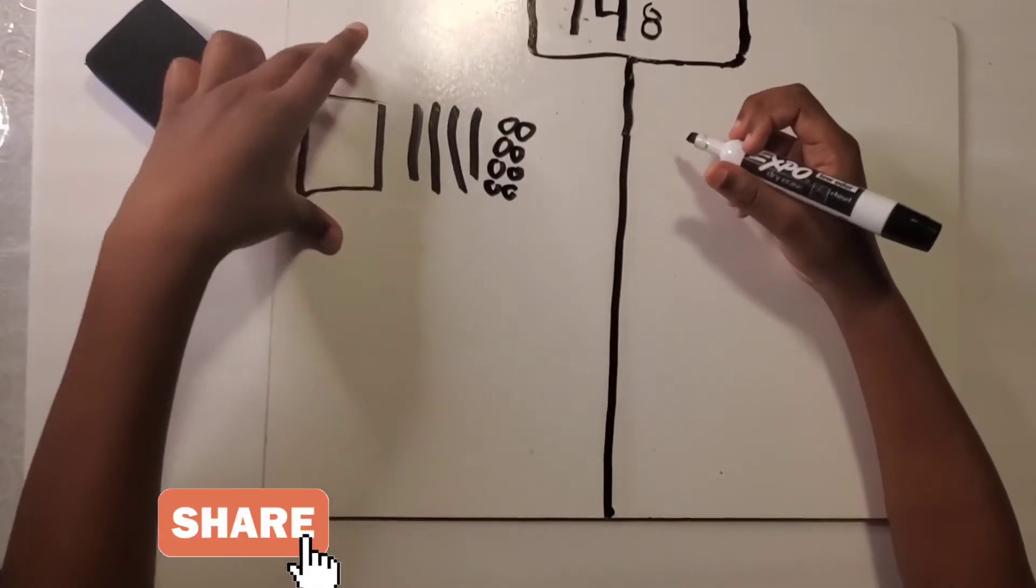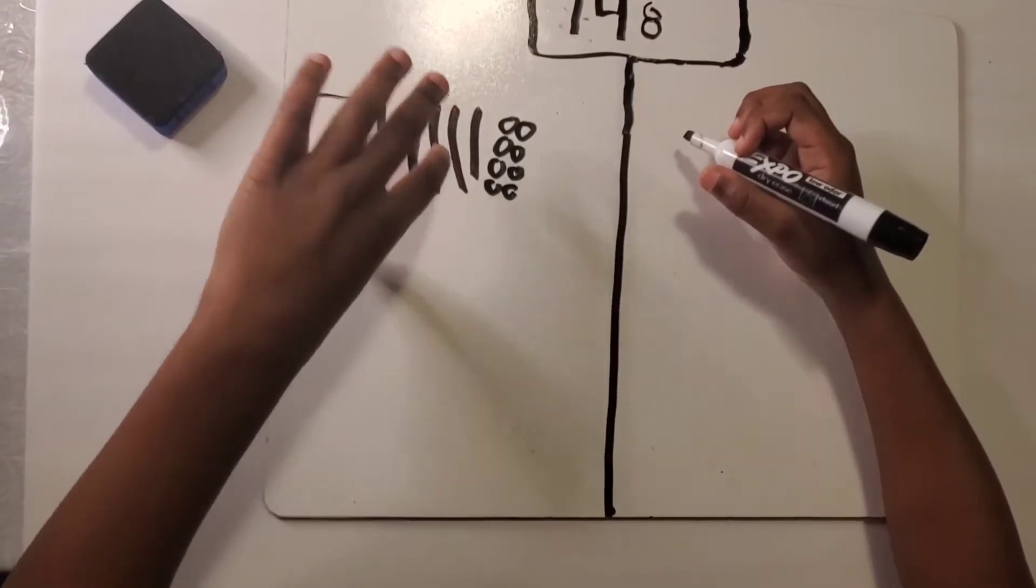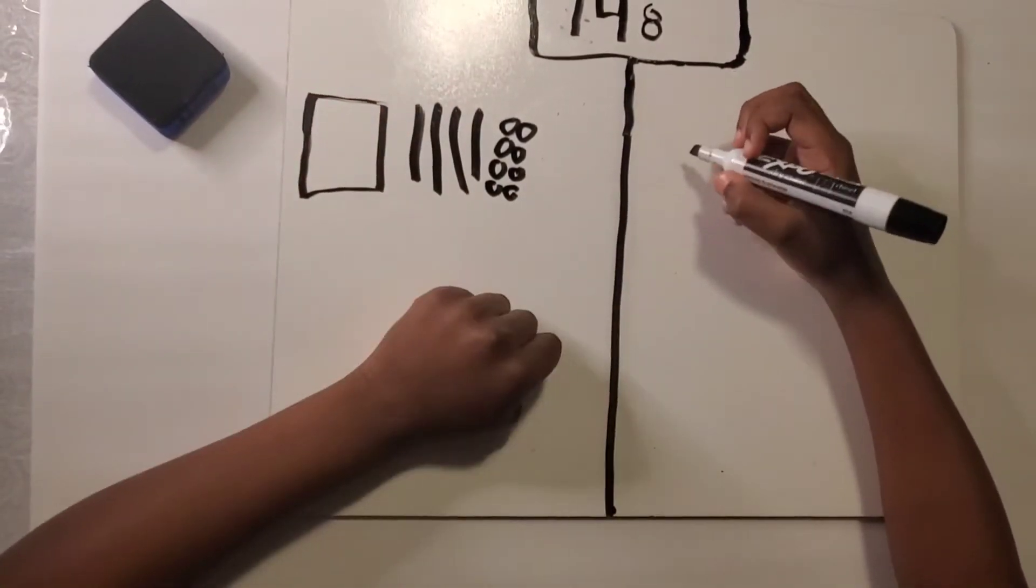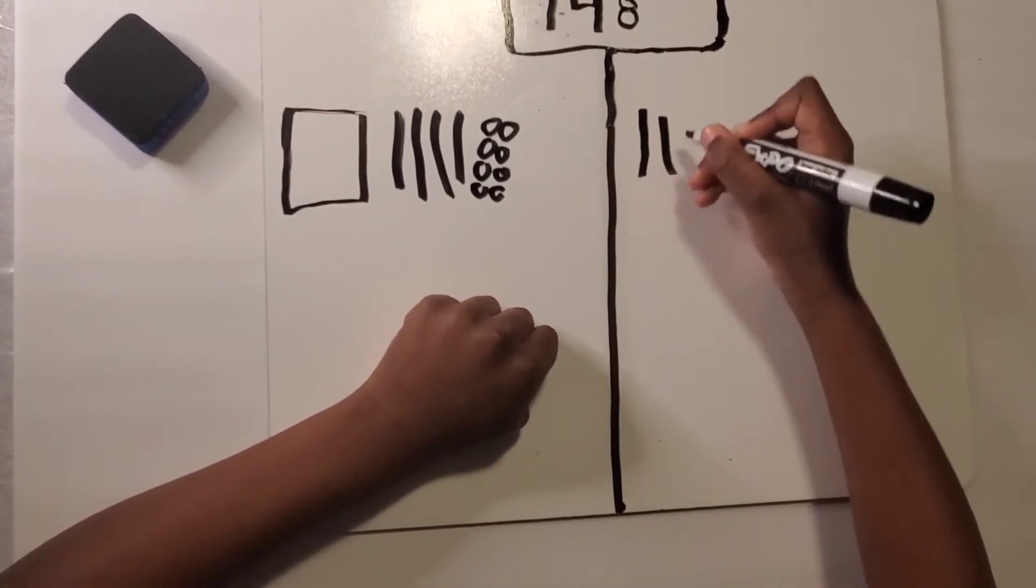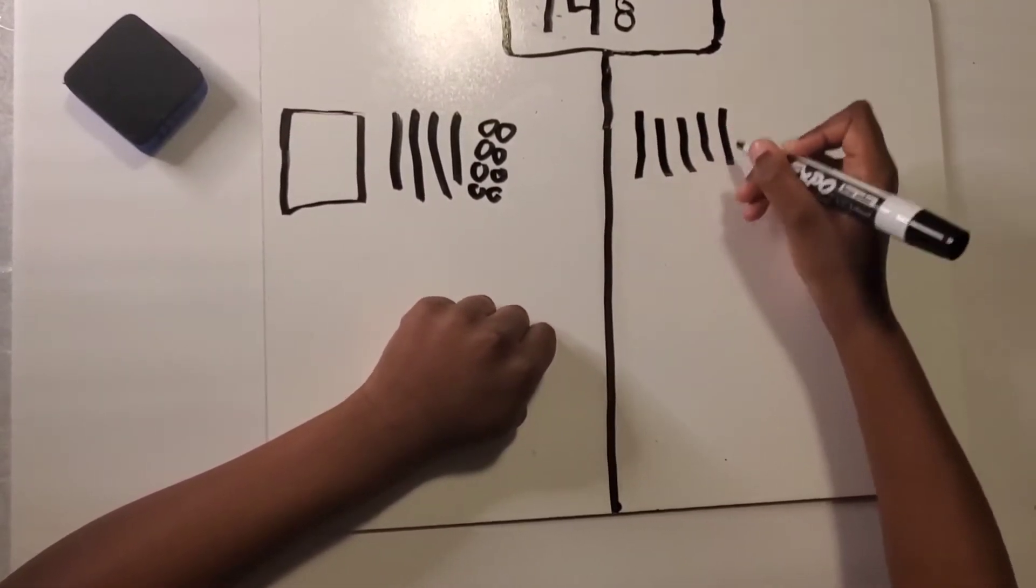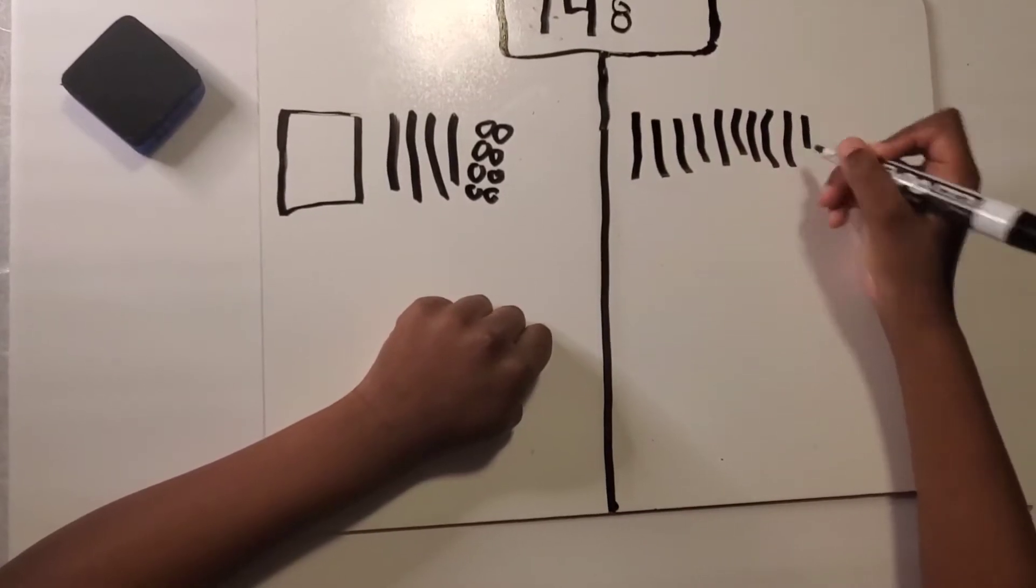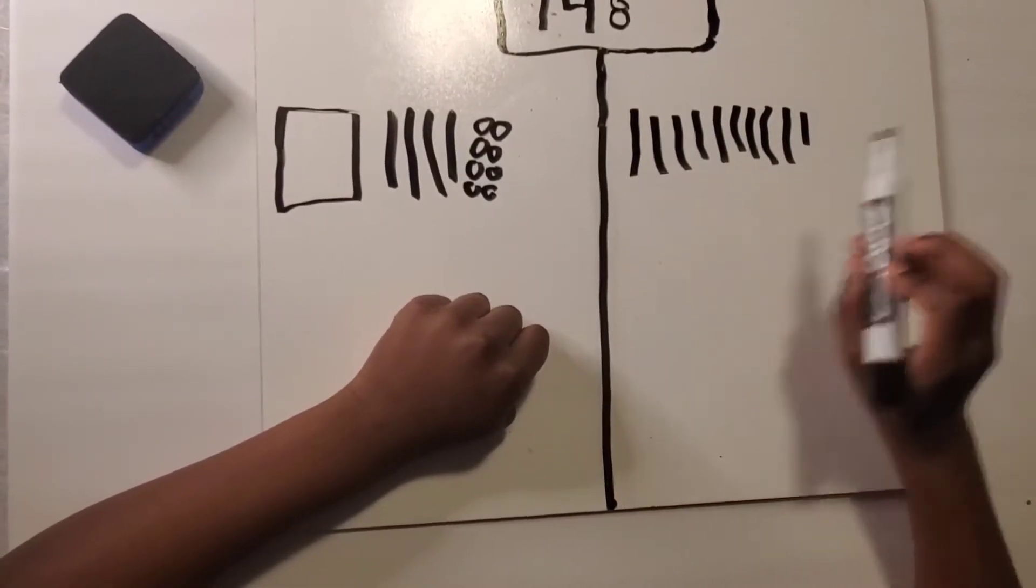So instead of me drawing a block, we're going to use tens and turn the tens to a hundred. So the way to turn them into a hundred is like this. So this is a hundred. We're going to count them from tens.